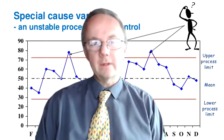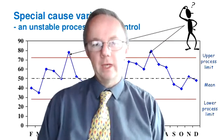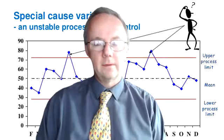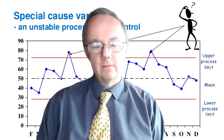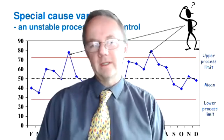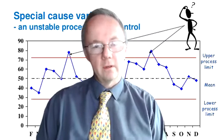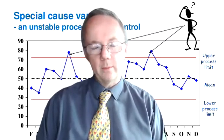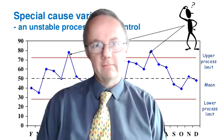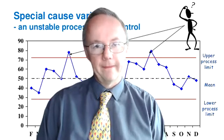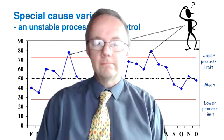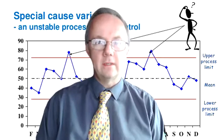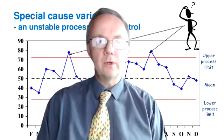So it was obvious to us that the people running the machine were the control. There was no statistical process control — it was just people fixing it every time it went wrong. So it was an interesting opportunity to improve the process.